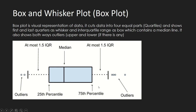The box plot can also show outliers in your dataset — this point and this point are outliers. The box plot is a visual representation of data: it cuts data into four equal parts, shows the first and last quarters as whiskers, and the interquartile range as the box which contains a median line. It shows both upper and lower outliers.